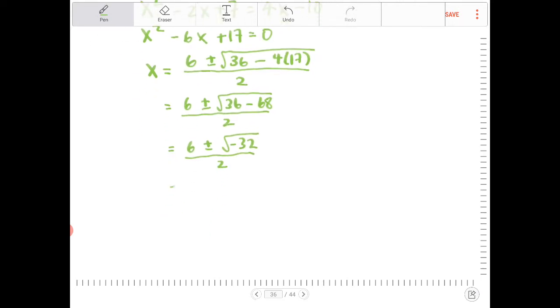And then this can be further reduced. Because 32, the largest perfect square that divides evenly into 32 is 16. So square root of 32 becomes 4 square root of 2. And because there's a negative inside of the square root, we're going to pull that out and make it i. And then all over 2.